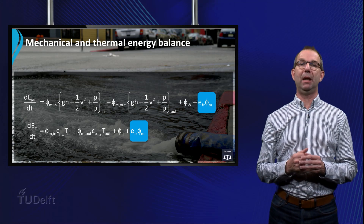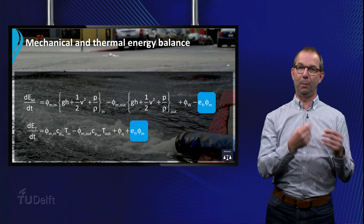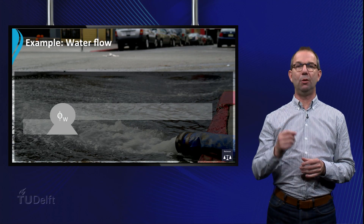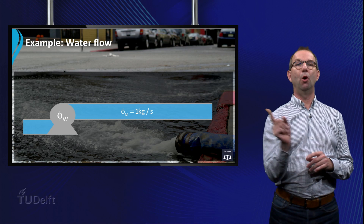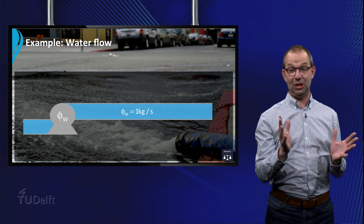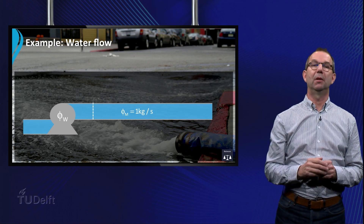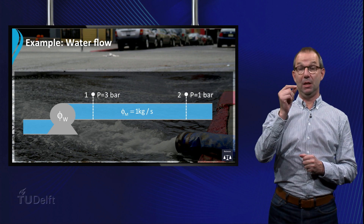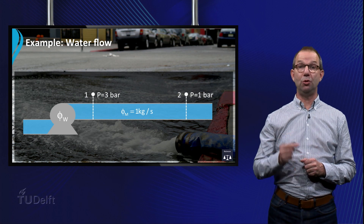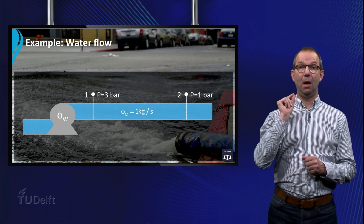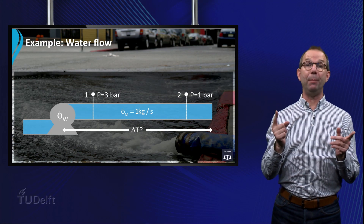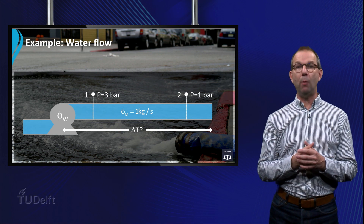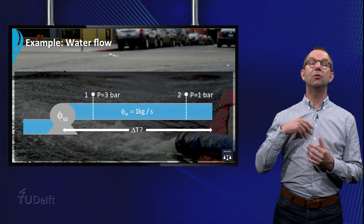To get a feeling for how much mechanical energy is converted into thermal energy, consider the following example. We consider the flow of 1 kg of water per second through a horizontal pipe under steady state conditions. At point 1 the pressure is 3 bars, and at point 2 in the tube the pressure is 1 bar. We will now pose two questions: first, how much is the liquid heated up by the frictional losses in the tube? And second, what is the power requirement of the pump driving this flow?